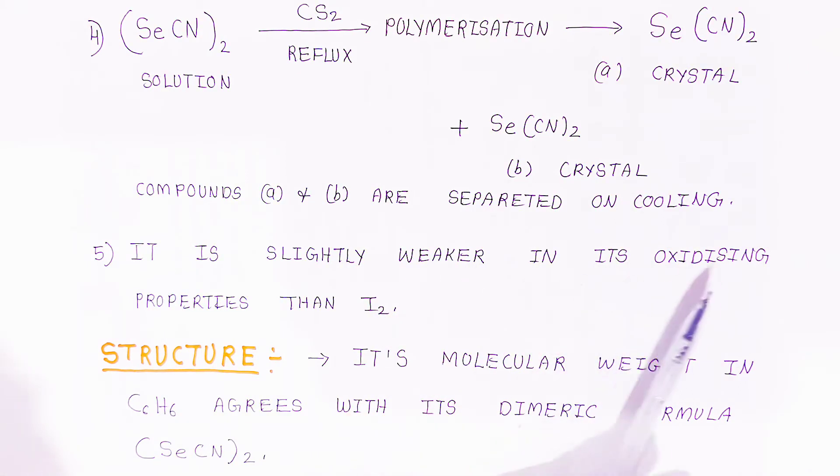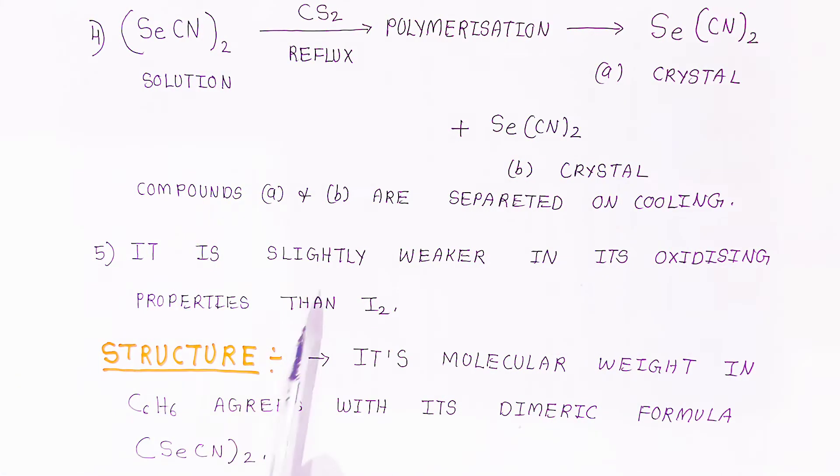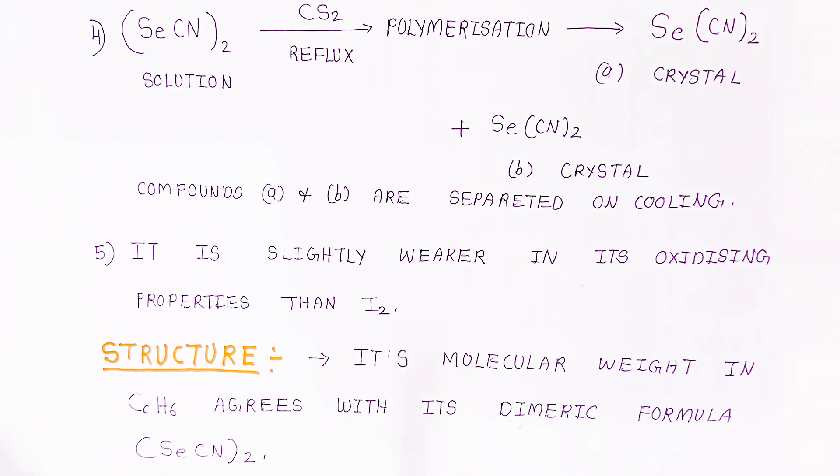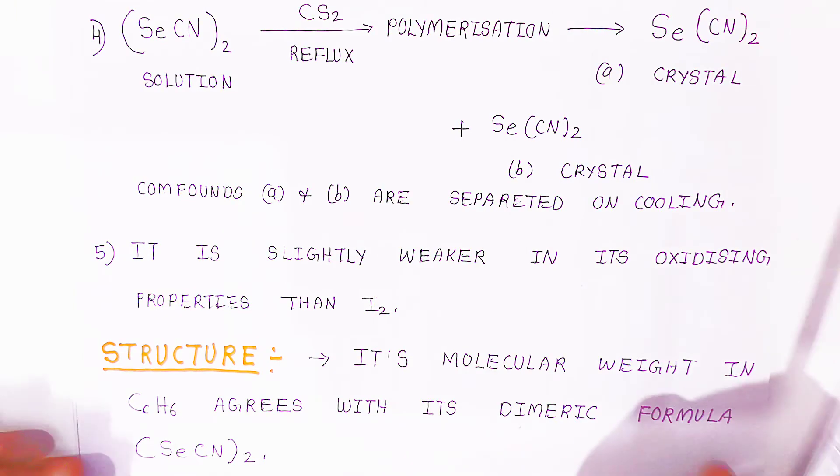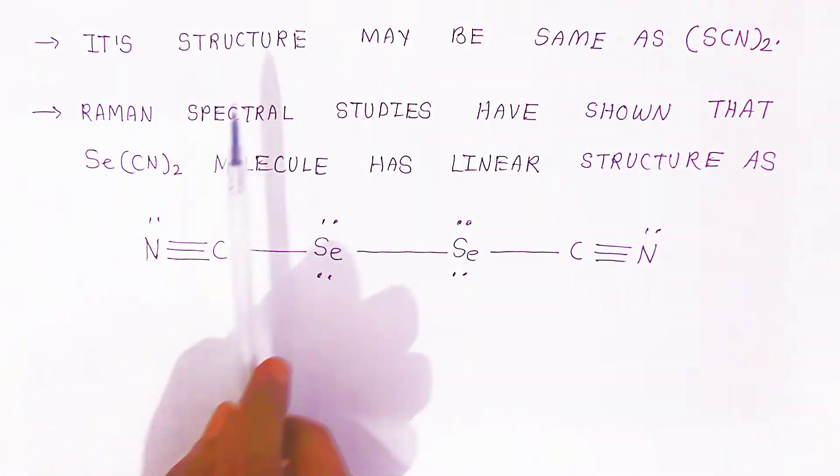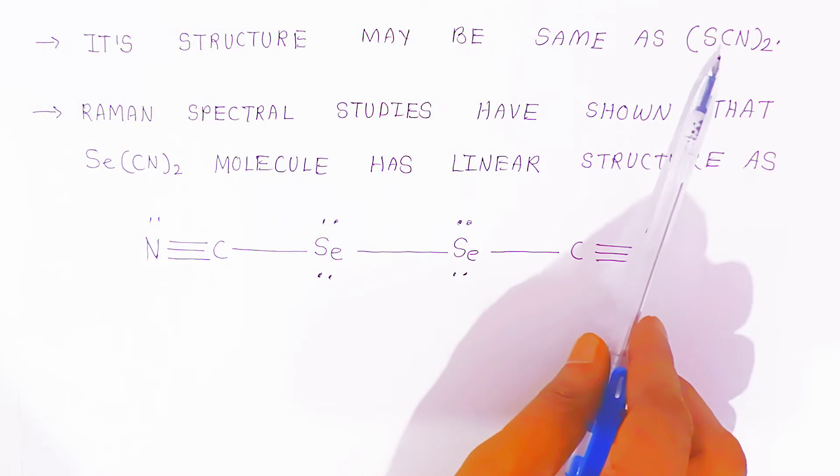It is slightly weaker in oxidizing properties than iodine. The structure: its molecular weight in benzene agrees with its dimeric form. Its structure may be same as thiocyanogen.